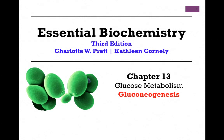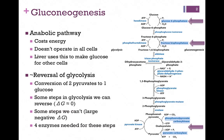We're continuing our studies in Chapter 13 on Glucose Metabolism, and in this lesson we'll be looking at Gluconeogenesis. This is the synthesis of glucose essentially from scratch. It is an anabolic pathway, meaning it's going to cost us some energy. It doesn't operate in all cells. The liver primarily uses this pathway to make glucose not only for itself, but for other cells in the body when glucose stores have been used. It is essentially the reversal of glycolysis.